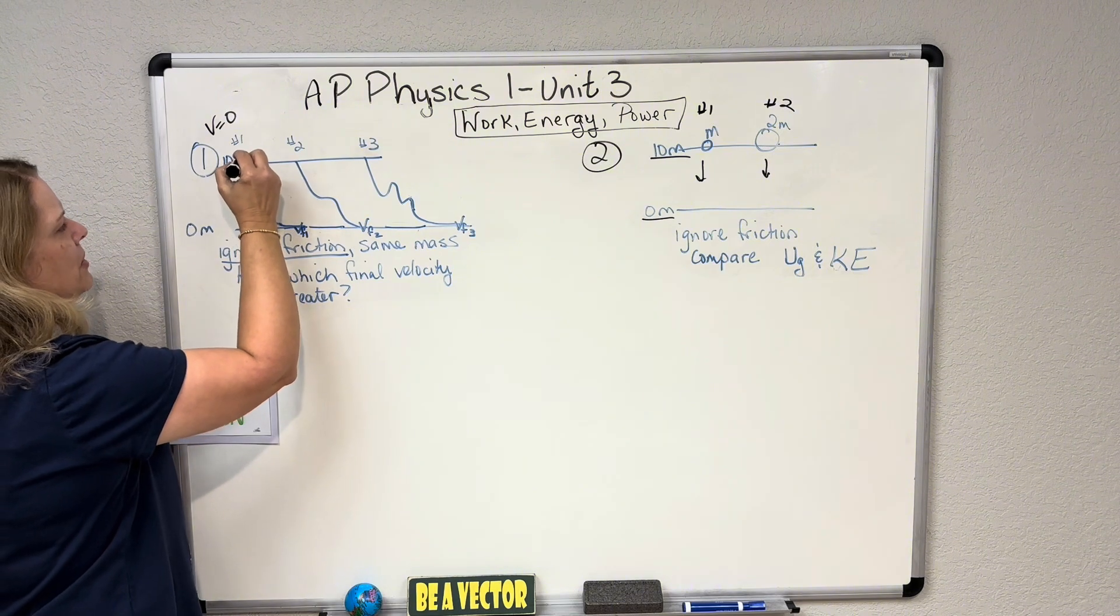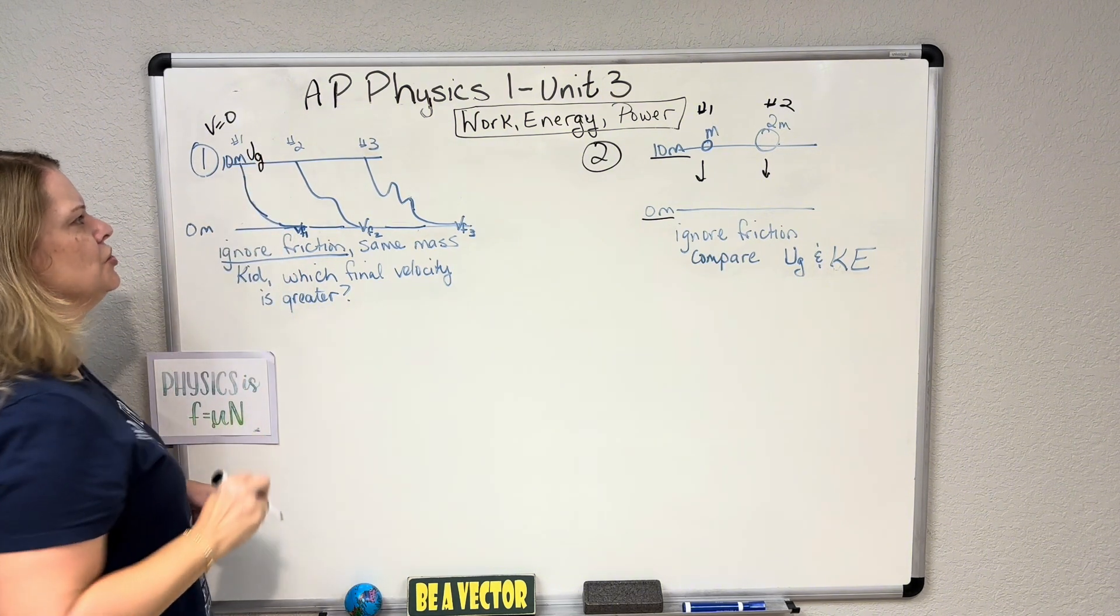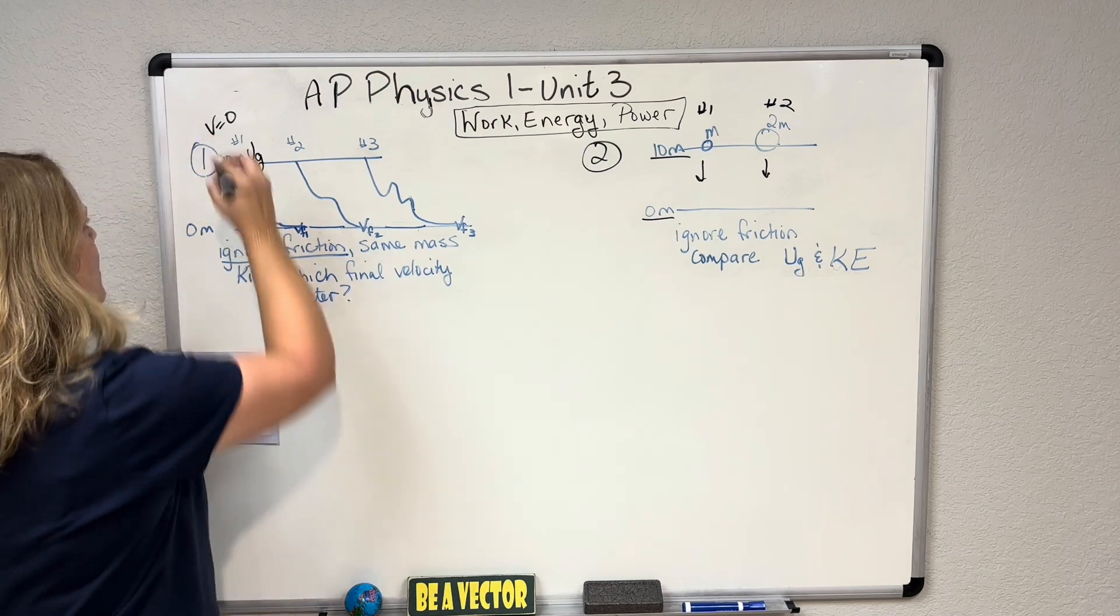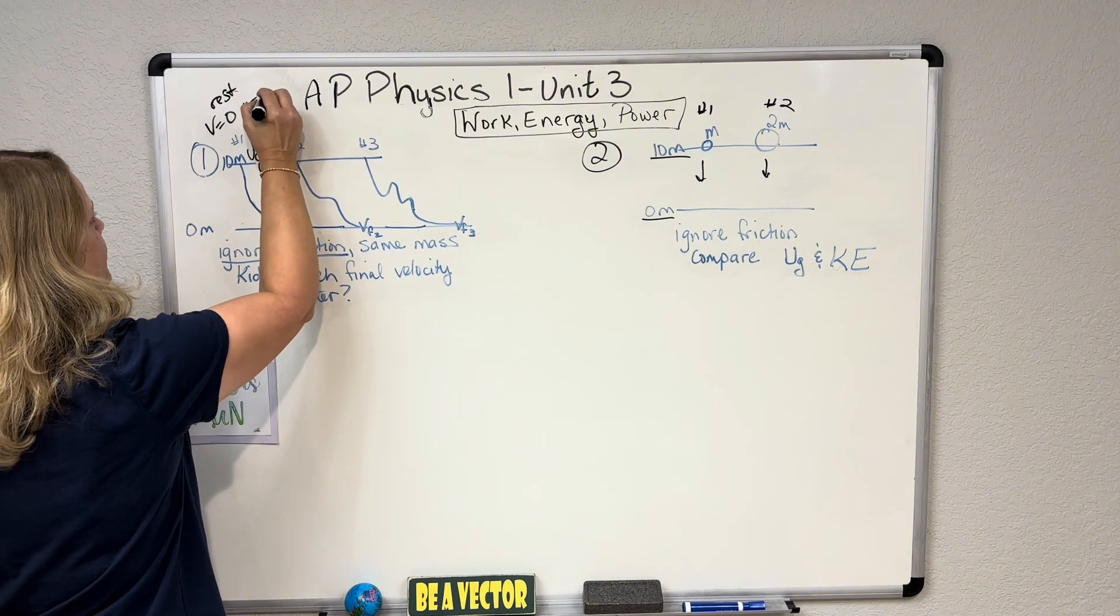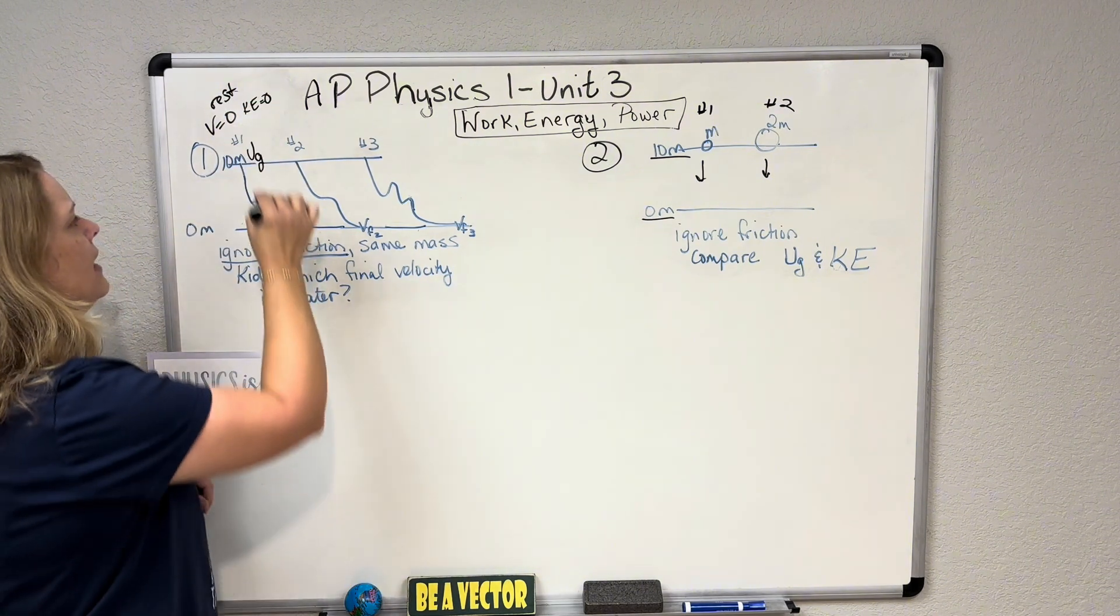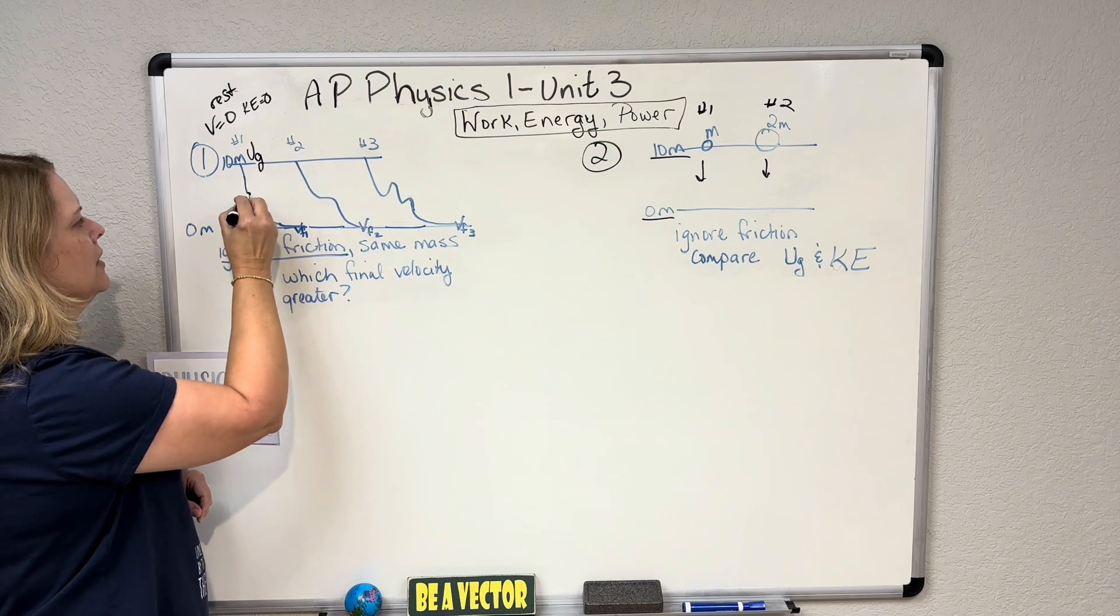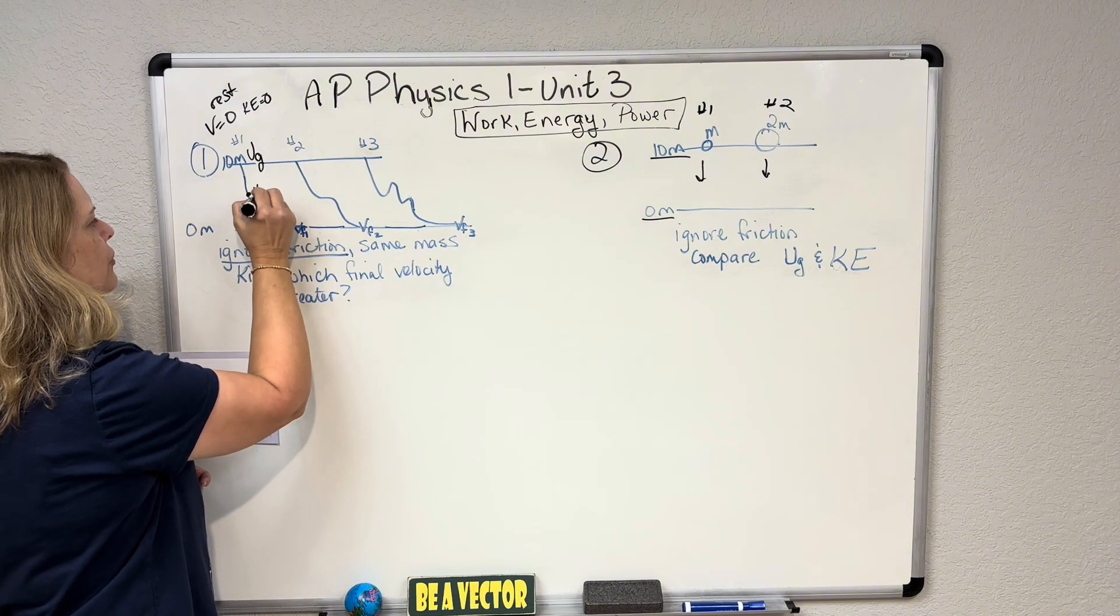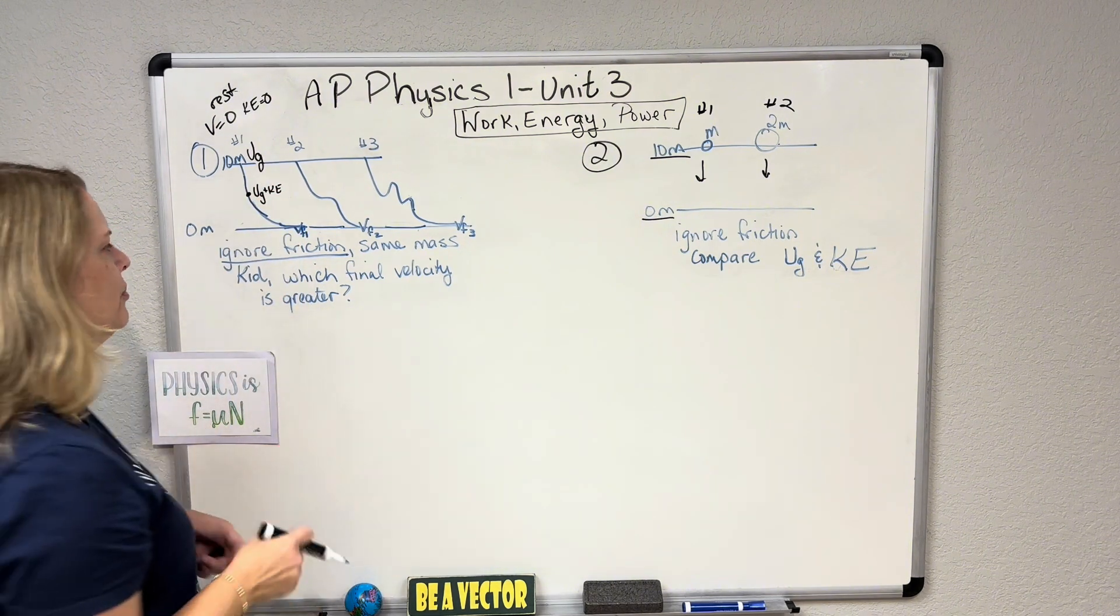First of all, if we are up here at the top, we have height. That means we have gravitational potential energy. There's no spring, so we don't have spring potential energy and we are at rest. So velocity is zero, which means our kinetic energy is zero because we have no movement. Now that's going to get converted as we drop. Like if we were here in the middle, we would have height and velocity. So we would have potential energy due to gravity plus kinetic.